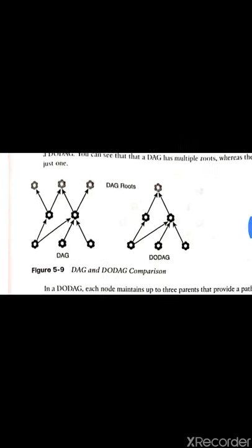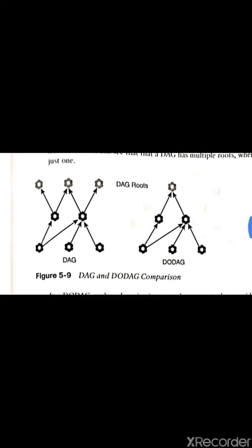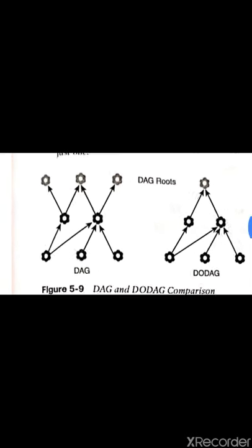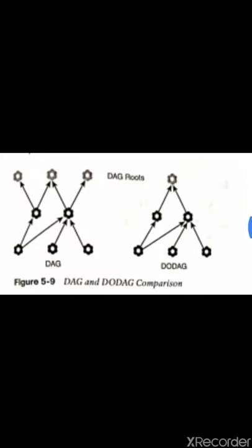We can see in the figure where DAG and DODAG are compared. The first figure is a DAG whereas the second one is a destination-oriented DAG. Let's see the difference between them. A DAG has multiple routes whereas the other has just one.